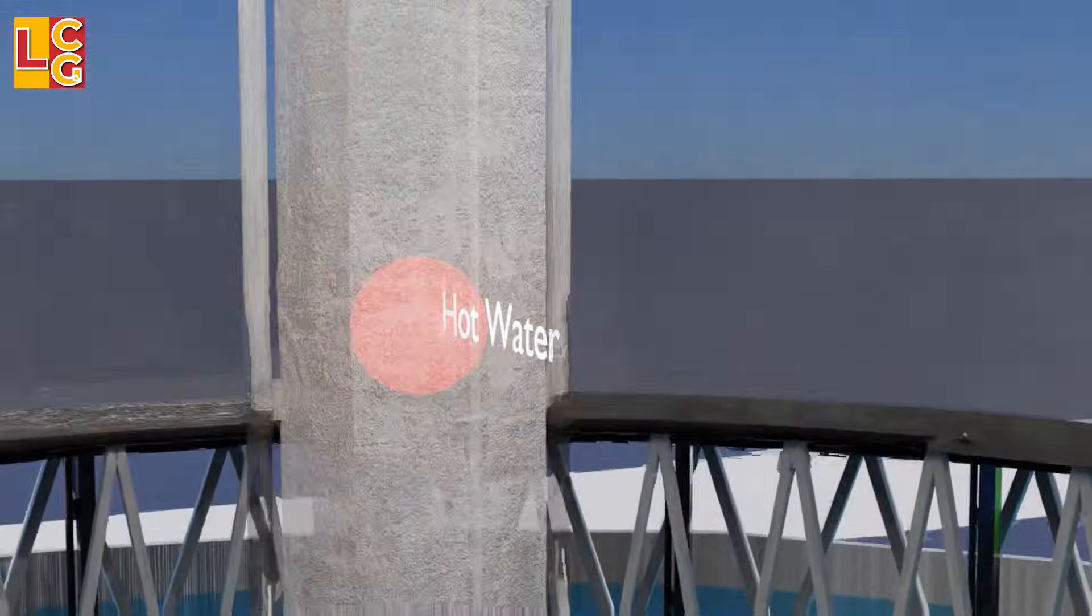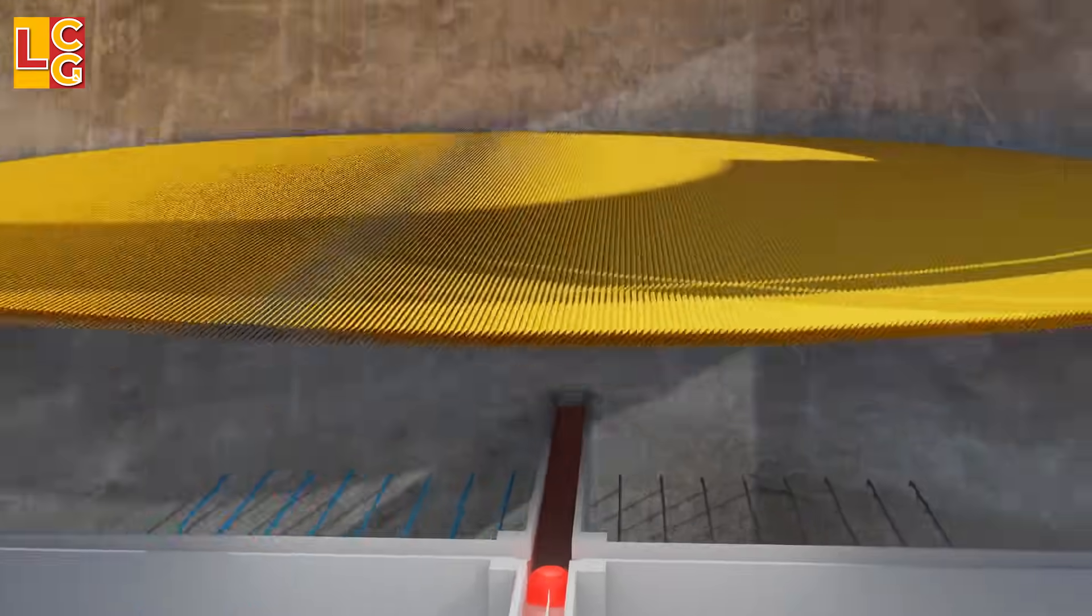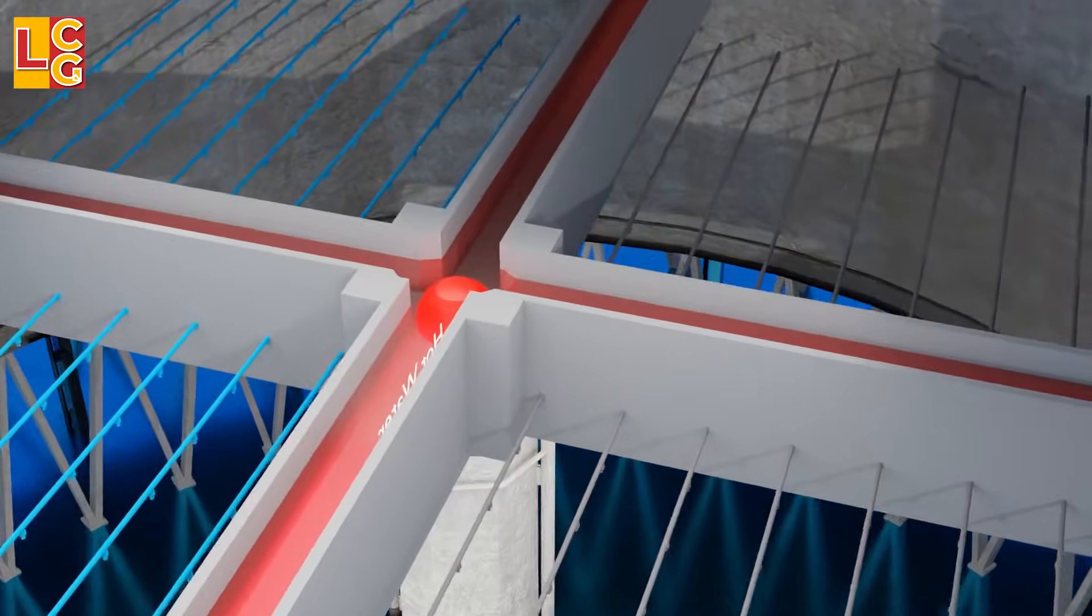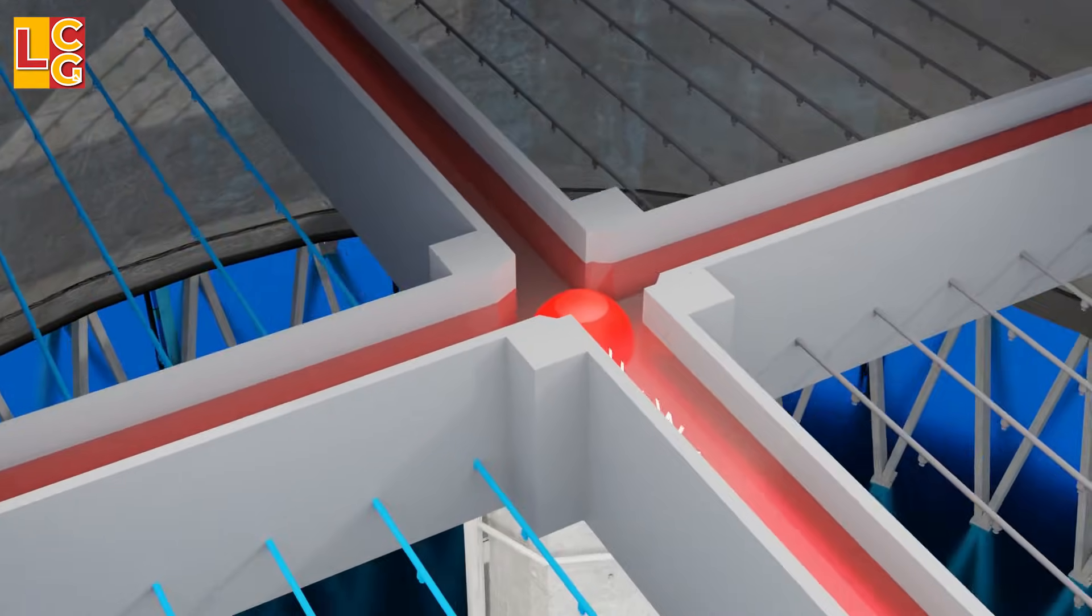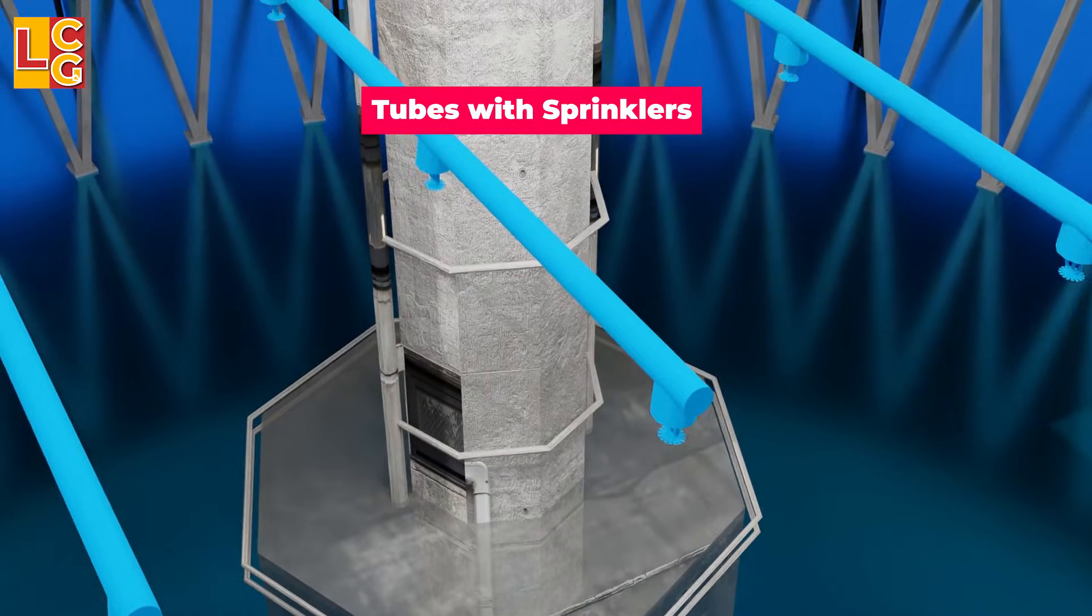In the cooling tower, the hot water then flows through these passages, then to these tubes where the hot water is sprinkled down to the water basin.